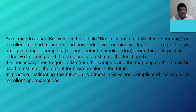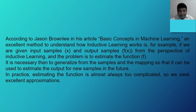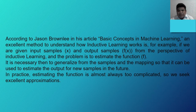According to Jason Brownlee, in his article 'Basic Concepts of Machine Learning,' an excellent method to understand how inductive learning works is: if we are given input samples x and output samples f(x), from the perspective of inductive learning the problem is to estimate the function f. It is necessary then to generalize from the samples and the mapping so that it can be used to estimate output for new samples in the future. In practice, estimating the function is almost always too complicated, so we seek excellent approximations.